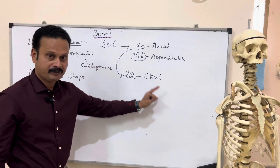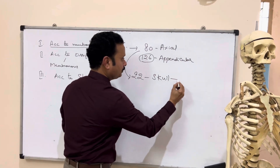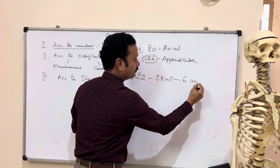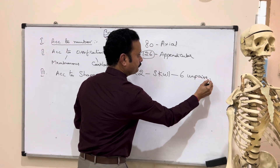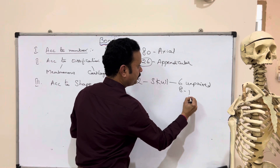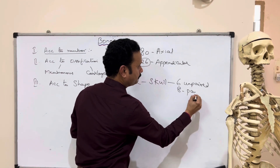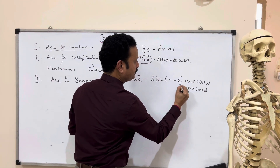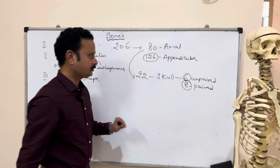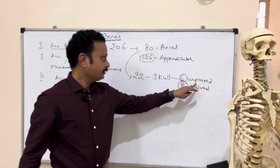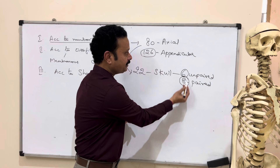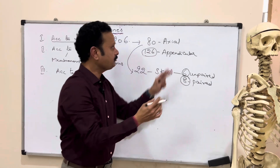To name them: 6 unpaired and 8 paired bones. 8 paired bones give 16, plus 6 unpaired gives 22.